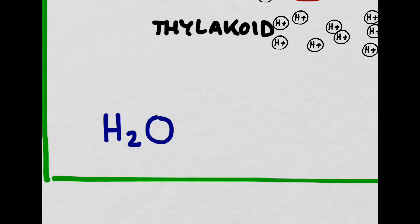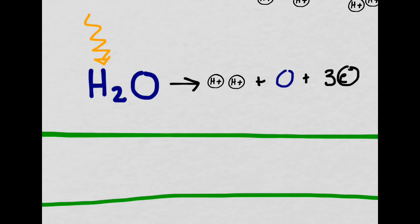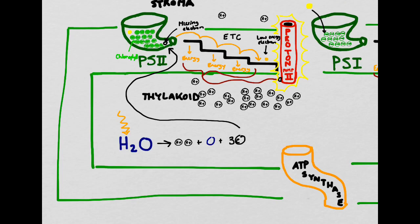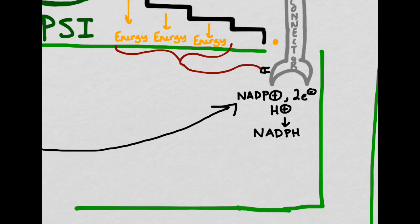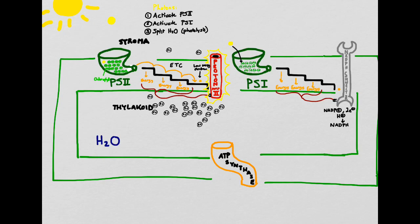In order to replace the missing electron, we look at the third task of a photon: splitting water in a process called photolysis. Looking inside the thylakoid, we see it already has some water in it. When struck by a photon, water will split into three components: protons, a molecule of oxygen, and three low-energy electrons. One of these electrons will go on to replace the electron that was lost in PS2, and the remaining two electrons from photolysis will transfer over to the end of PS1, where they become the two electrons necessary to form NADPH from NADP+. The oxygen will diffuse out of the leaf through the stomata — this oxygen, the waste product of photolysis, is the oxygen that we breathe.